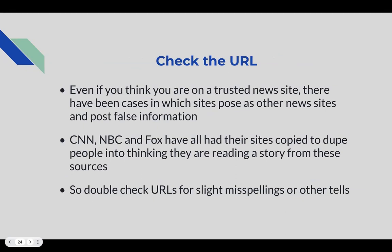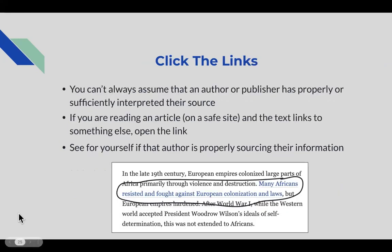Something helpful to do each time you access a website — even a trusted news site — is to check the URL. There have been cases where sites pose as other news sites and post false information, and people believe it because they're deceived about whether they're on the real site. CNN, NBC, and Fox have all had their sites copied to fool people into thinking they're reading a real story. Always check that the URL is correct, has correct spelling, and doesn't have any additional weird symbols or underscores.